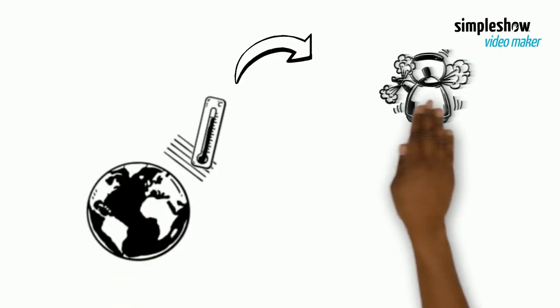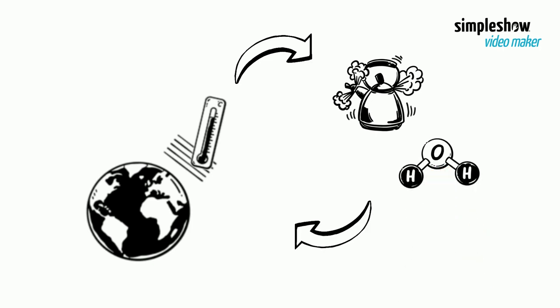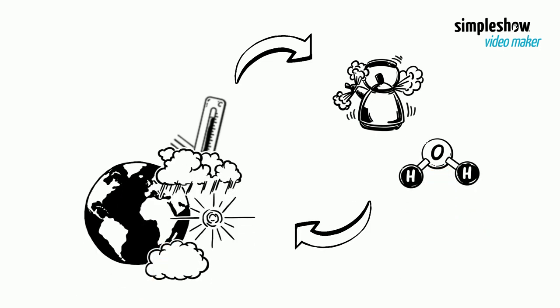With more heat in the atmosphere comes more evaporation. Consequently, there is more water vapor in the air too, contributing to global warming, climate change and extreme weather conditions.